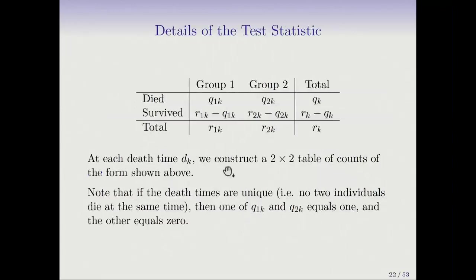So what I just said we summarize in this table, here's the two groups, say males and females. Here's the number that died. So this is a special little table just for the death time at DK. We're looking at the whole process, but it's a cross section saying, at one time DK, this is what we see. And we're going to have such a table for each DK. If the death time is unique, then one of these is a one and the other is a zero.